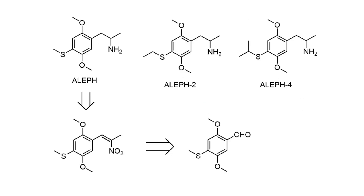Here are some of the earliest compounds in the Aleph series. The names don't have any particular chemical significance — they're just named sequentially in the order Shulgin came up with them. Methyl, ethyl, and isopropyl are some of the earliest. All of them are synthetically derived from the lithium aluminium hydride reduction of a nitrostyrene, which in turn is formed by the Henry condensation of the appropriate nitroalkane with the benzaldehyde. For the rest of the synthesis discussion, I'll just be describing how the benzaldehydes were synthesized.